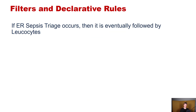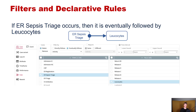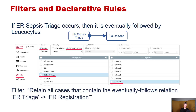Or: if ER sepsis triage occurs, then it is eventually followed by leukocytes. This is how we represented it before. Again, it's a simple path filter retaining the cases. However, this time we use eventually-follows instead of directly-follows, which gives us: retain all cases that contain the eventually-follows relation ER triage → leukocytes.